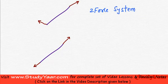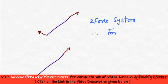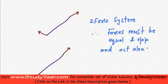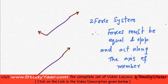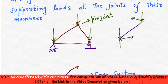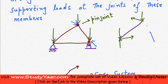It is a two-force system; therefore, forces must be equal and opposite and act along the axis of this member. Just realize that in every member of a truss, we are going to have such a scenario. If you look at this member as well, there are a couple of forces acting at each point — there are only two forces — so if you draw the FBD of this member, it is going to have forces like this.